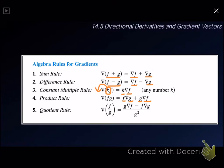If you take a look at the last rule, it is the same as the quotient rule that we have learned in differentiation. If we want to find the gradient of f over g, it will be equal to g multiplied with gradient f, minus f multiplied with gradient g, and this whole expression is divided by g squared.